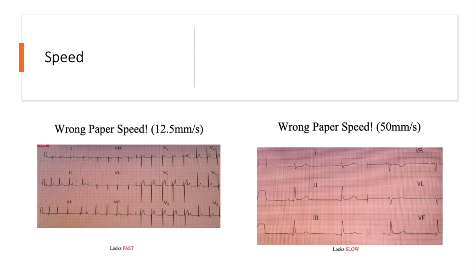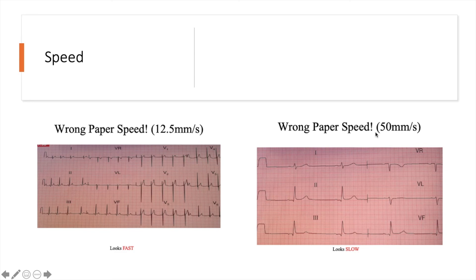The second important thing to check is the printing speed of the ECG. The normal printing speed is 25 millimetres per second, and this is usually stated at the bottom of the ECG paper. If the speed is too slow — for example, 12.5 millimetres per second — the ECG will look fast, making the patient appear to have a fast heart rate when it is actually normal. Conversely, if the printing speed is too fast, the patient will appear to have a very slow heart rate when it is completely fine.